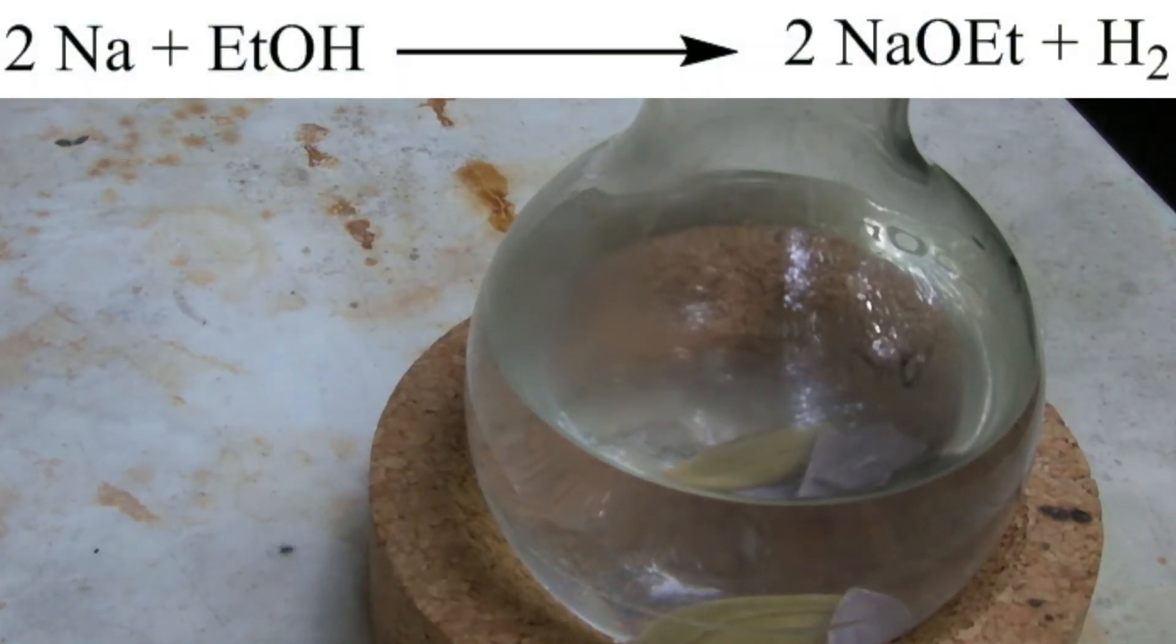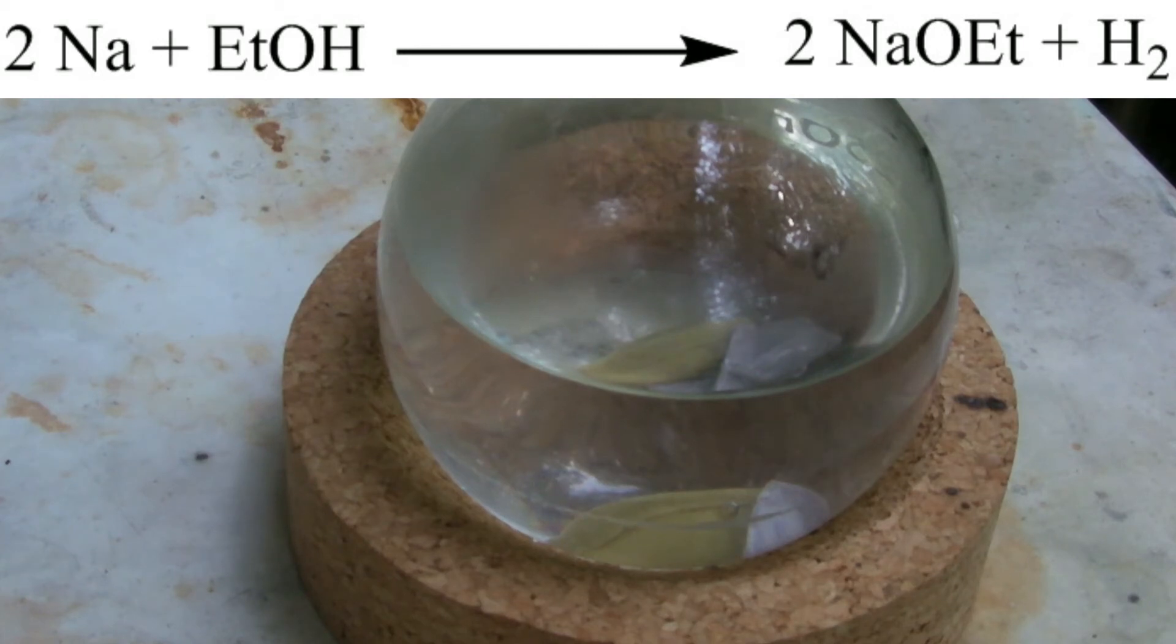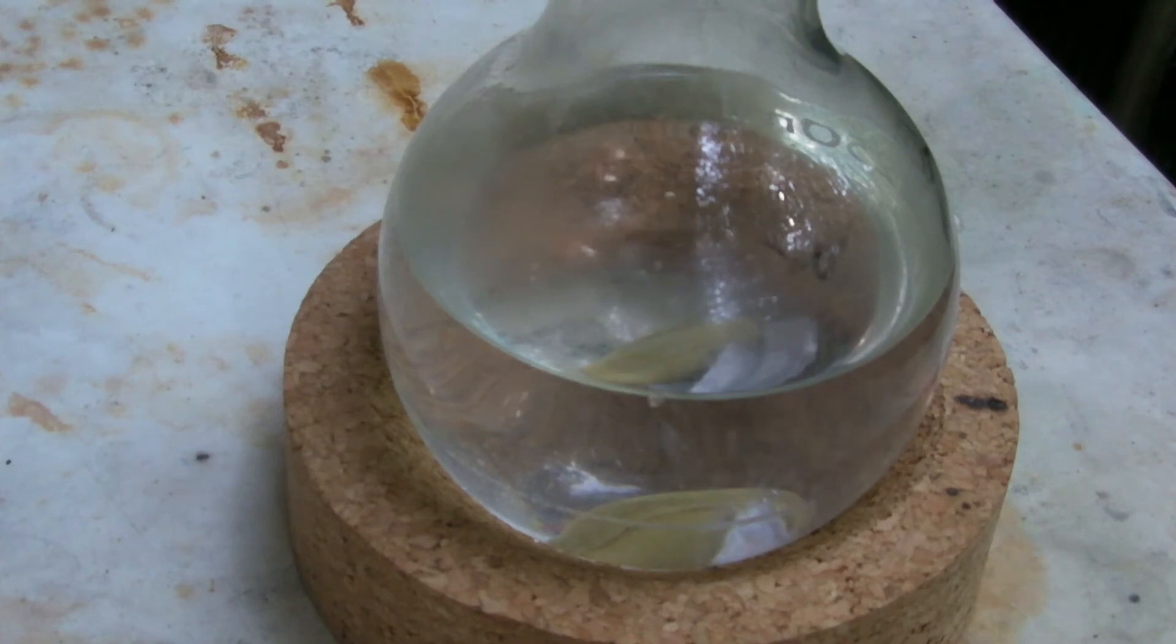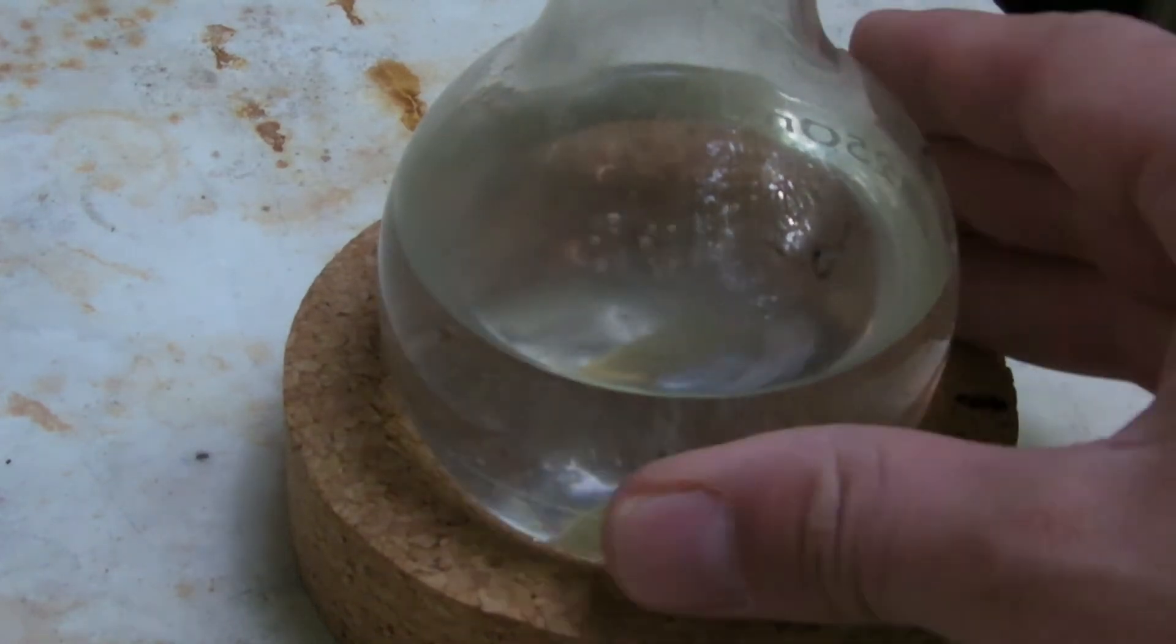Here the ethanol reacts with the sodium to form sodium ethoxide. With residual water it reacts to form sodium hydroxide again. When this is distilled, anhydrous ethanol which has about 99 to 100 percent purity can be obtained. This could not be achieved with simple distillation.